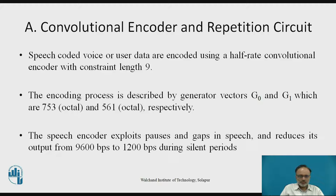The convolution encoder is generally used for speech-coded voice — a half-rate convolution encoder with constraint length 9. It uses the concept from digital communication, encoding the process described by generator vectors G0 and G1 with 753 octal and 561 octal respectively. The speech encoder exploits pauses and gaps in speech and reduces the output from 9600 to 1200 BPS during silent periods.